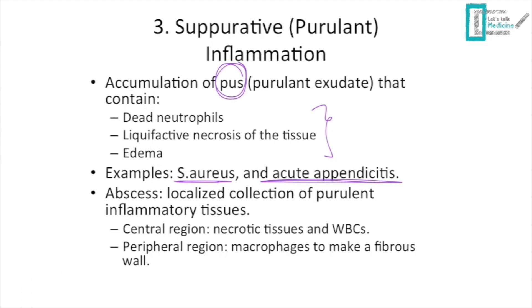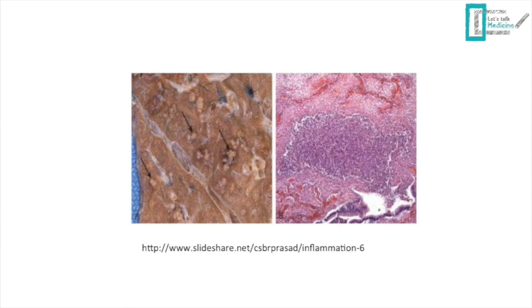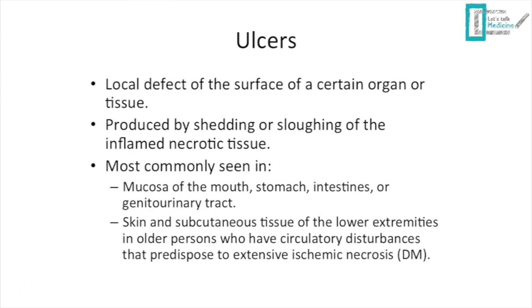Suppurative inflammation can lead to abscess formation — a localized collection of purulent inflammatory cells. Abscesses have a central region of necrotic tissue and white blood cells, and a peripheral region containing macrophages forming a fibrous wall. In the lung, multiple foci of suppurative inflammation containing pus with predominant neutrophils can be seen.